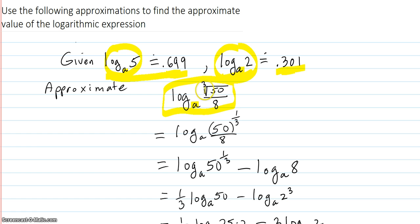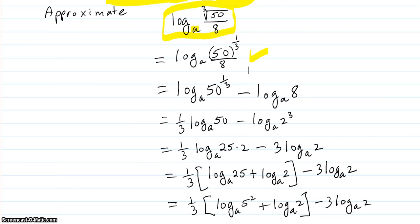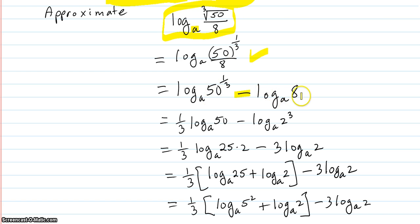The first thing we need to do is get rid of the radical and write it as a one-third power on the 50. Then we have to break this up as a log of a division, which becomes a subtraction of the logs, so we have this subtraction here.